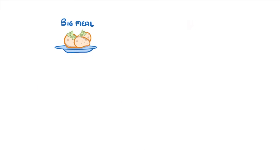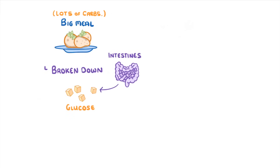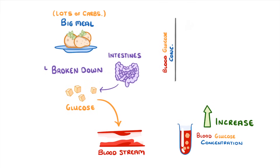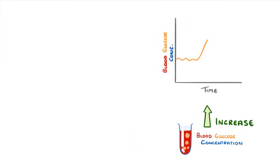If you were to eat a really big meal that had loads of carbohydrates in it, then those carbohydrates would be broken down in your intestines into lots of glucose molecules. These would then be absorbed into your bloodstream and cause your blood glucose concentration to increase. We can see this if we plot it on a graph that measures how blood glucose concentration changes with time. Before the meal, the level of glucose fluctuates slightly but stays around the normal level. Once we eat the carbohydrates though, we see this spike as the glucose is absorbed into the blood.